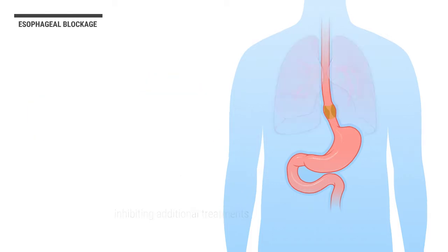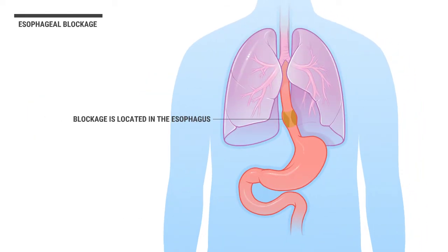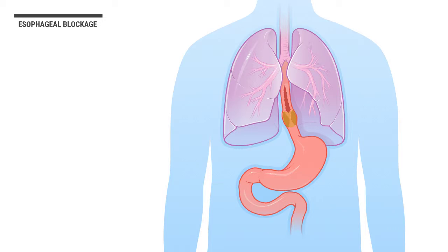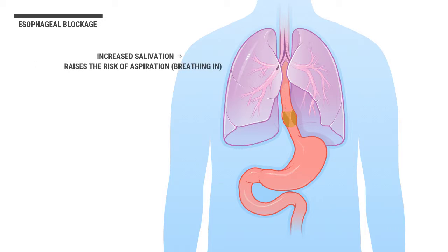When the blockage is located in the esophagus, food and liquid cannot pass, and the patient will have increased salivation, which raises the risk of aspiration or breathing in of the food, liquid, and saliva into the lungs.